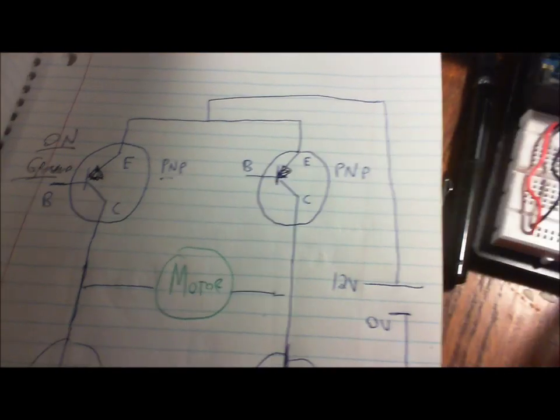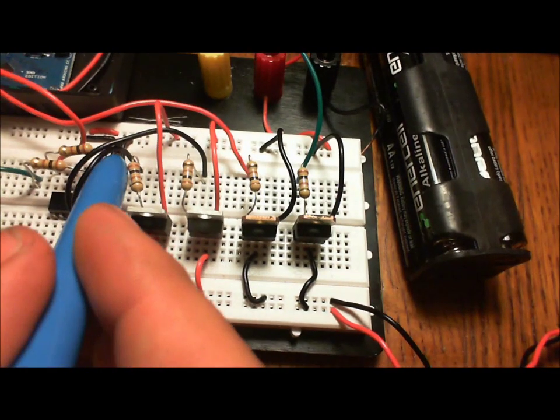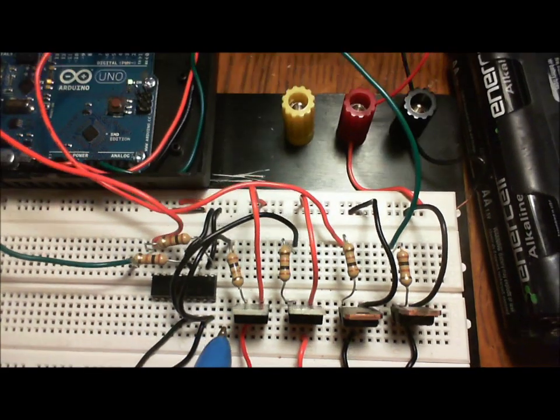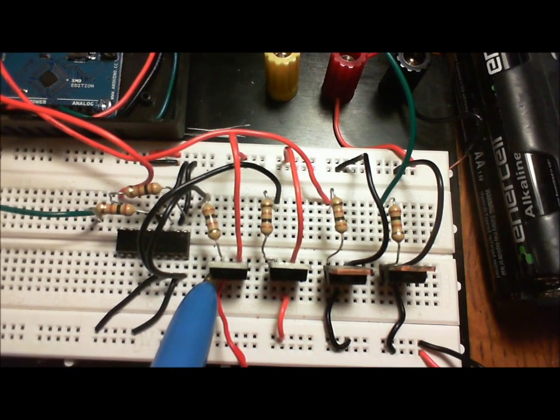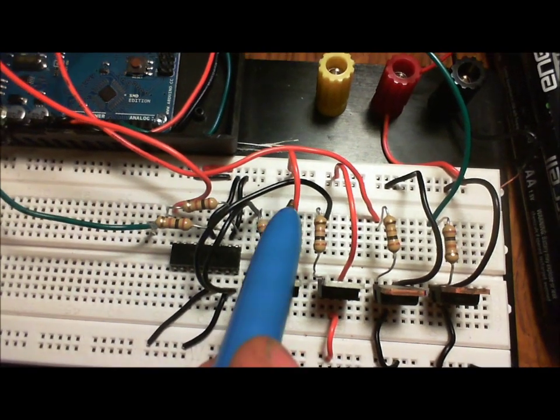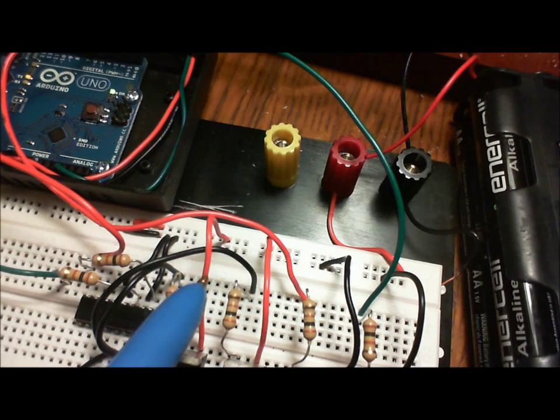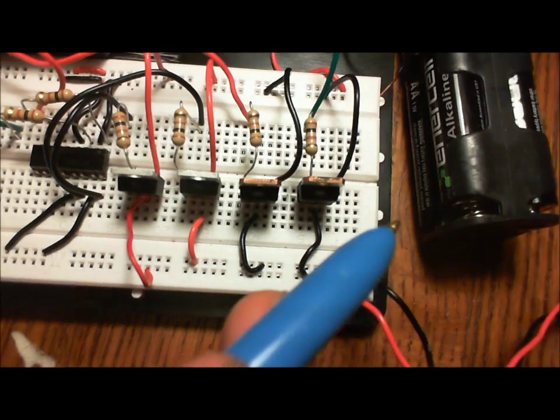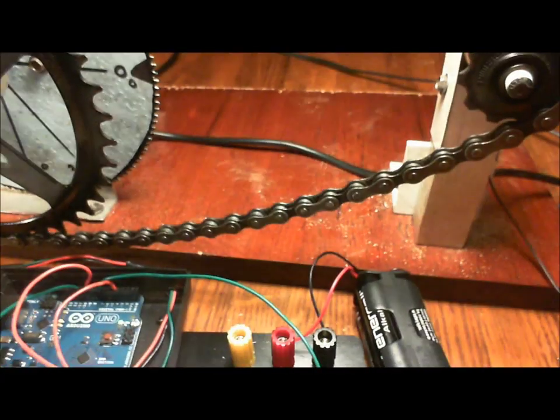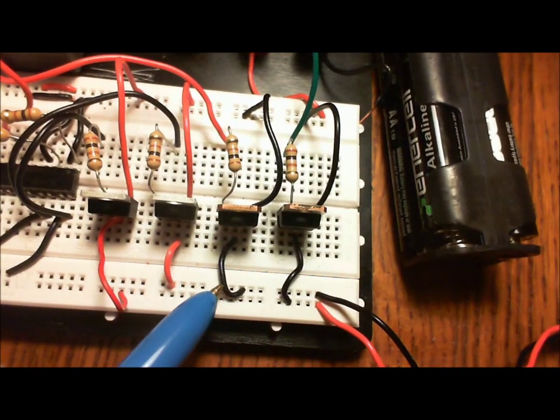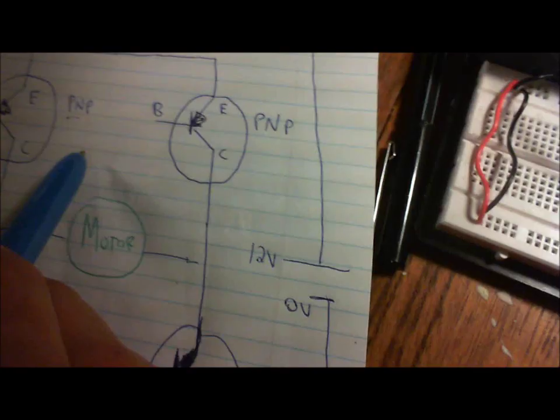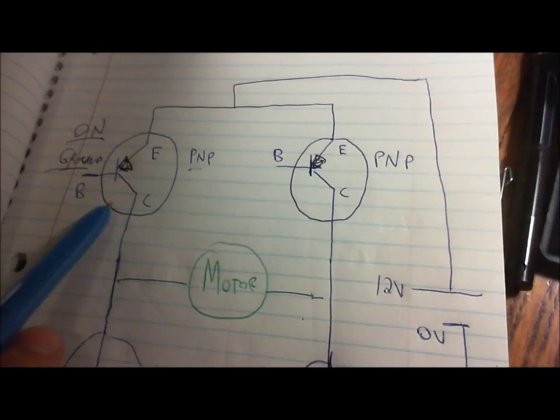So now back to the optical isolator. When we send this ground to the base of the PNP transistor, it's on. And it's essentially a switch that lets current flow through here and to the motor. And then if the other side's on, back to the battery. So again, these are switches.